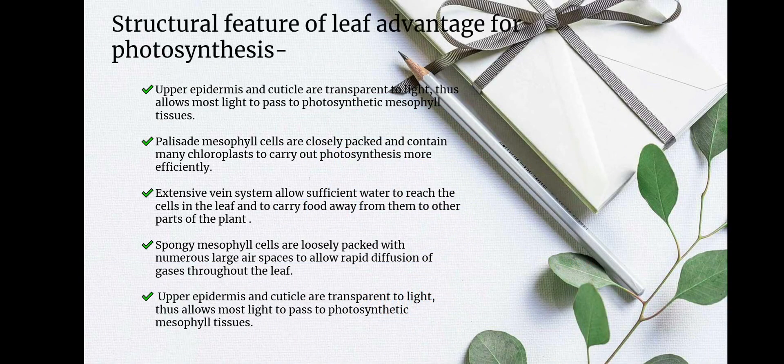Next we will see structural features of a leaf advantageous for photosynthesis. Upper epidermis and cuticle are transparent to light, thus allowing most light to pass to photosynthetic mesophyll cells. Palisade mesophyll cells are closely packed and contain many chloroplasts to carry out photosynthesis more efficiently. Extensive vein systems allow sufficient water to reach the cells in the leaf and carry food away to other parts of the plant. Spongy mesophyll cells are loosely packed with numerous large air spaces to allow rapid diffusion of gases throughout the leaf.